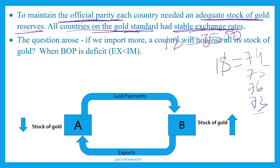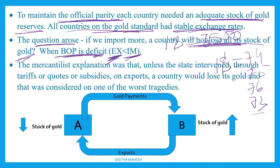One question is: if one country has a balance of payment deficit, it will lose all its stock of gold. If there is a balance of payment deficit, imports exceed exports. They will pay for imports in gold, and if exports are low, they cannot earn more gold. This is the worst condition for a country — losing all its gold.